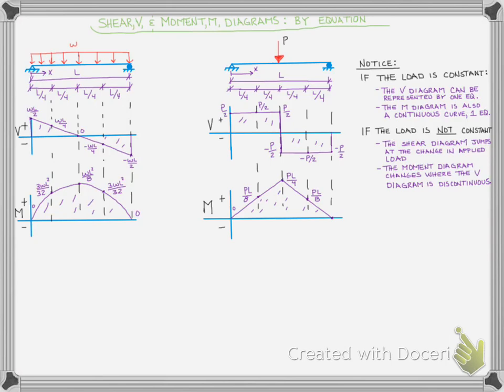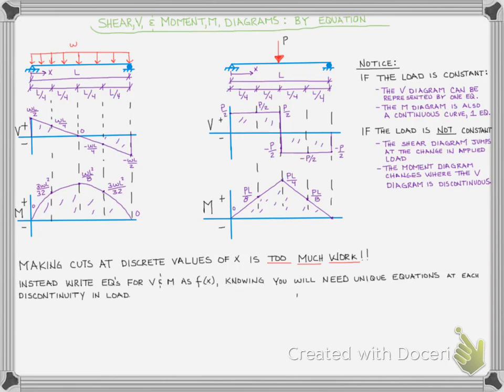Now I already said that we made these shear and moment diagrams by making cuts at discrete points. So for here, because I kind of knew what it would look like, I only made them at L over four, L over two, three L over four, so at every quarter points. But if you don't know what it's going to look like, if you're new to this, you probably have to make like 16 points and that's a lot of work. We just don't want to do that, it's too much work. So instead, we want to write equations for the shear and moment as a function of x, like we're writing the equation of the lines that represent the curves on the shear moment diagrams.